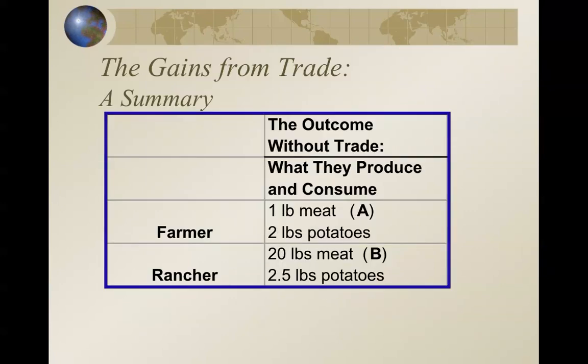As a summary of self-sufficiency without trade: the farmer can produce 1 pound of meat and 2 pounds of potatoes, and the rancher produces 20 pounds of meat and 2.5 pounds of potatoes.